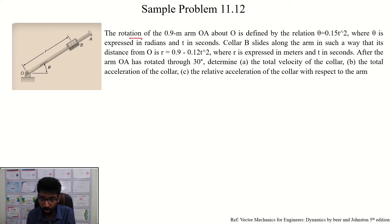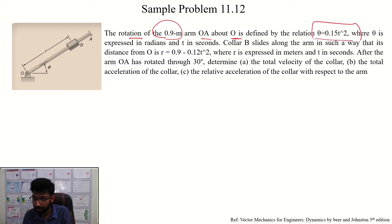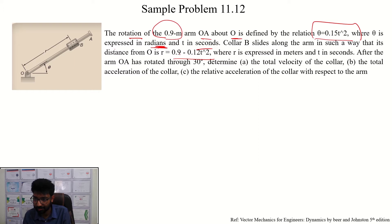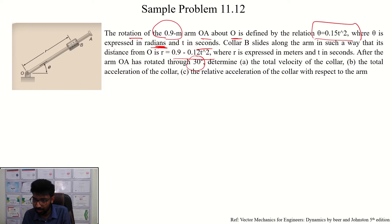The rotation of the 0.9 meter arm R is defined by the relation theta equals 0.15t squared, where theta is in radians, R is in meters, and T is in seconds. After theta equals 30 degrees, we need to find the total velocity and total acceleration.